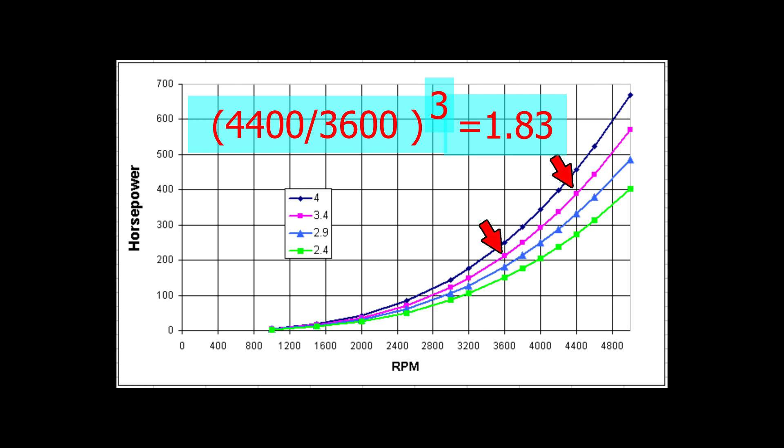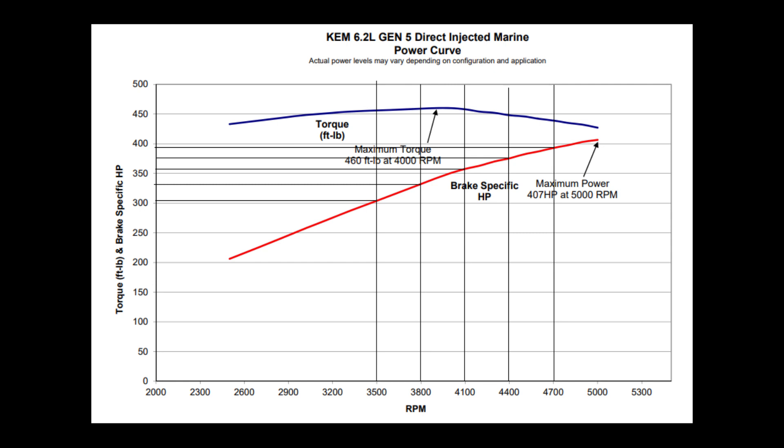So sometimes people wonder what would happen if they change their impeller. Would the RPMs go up or down, and what would happen to the peak horsepower? Well, if you have a performance chart like this for the 6.2 DI engine from Chem, you can take the horsepower curve and overlay it onto the impeller horsepower curve and get something like this.